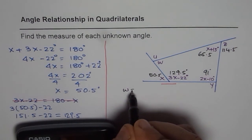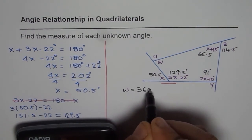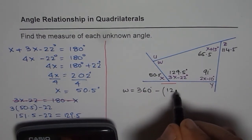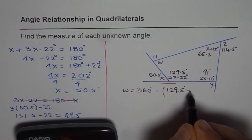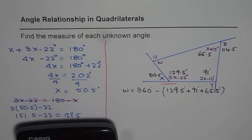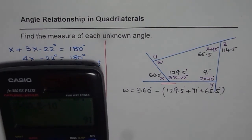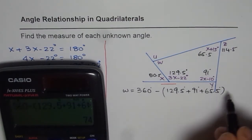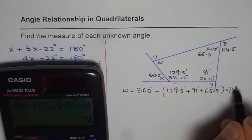W should be equal to 360 degrees, which is sum of all these angles minus sum of what you found. So it is 129.5 degrees plus 91 degrees plus 65.5 degrees. So use your calculator and calculate these answers. Minus within brackets, you can say 129.5 plus 91 plus 65.5, bracket close, equals to 74 degrees.